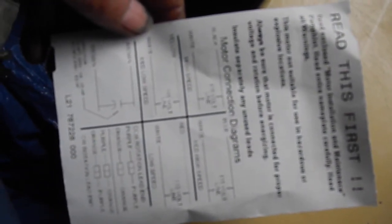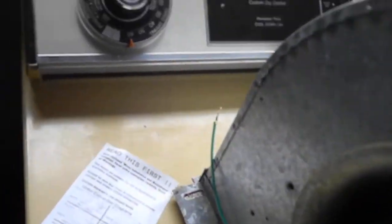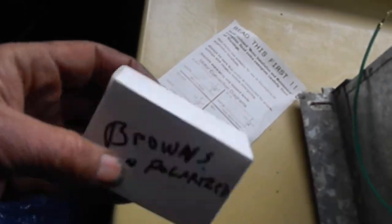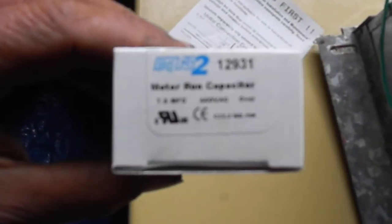By just looking at it, it was sort of hard to figure out, but basically these two brown wires go to the capacitor. It's always good to replace the capacitor. This is a non-polarized run capacitor.